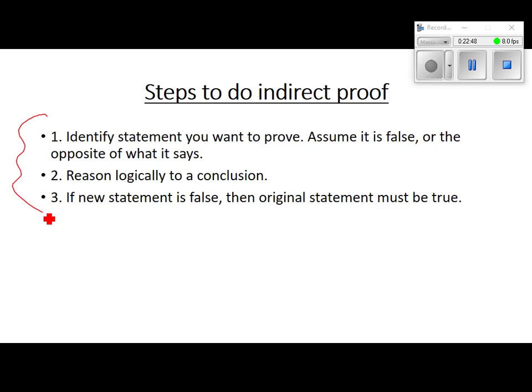Write this down — these are the steps for an indirect proof. The first thing you're going to do is change the original statement to the opposite. I don't like saying 'the opposite' because not everything has an obvious opposite. Same idea when we talked about this earlier in the year: if I say it is raining outside, what's the opposite? It is not raining — not 'it is sunny.' You guys get opposites mixed up. The opposite of rain is not sun.